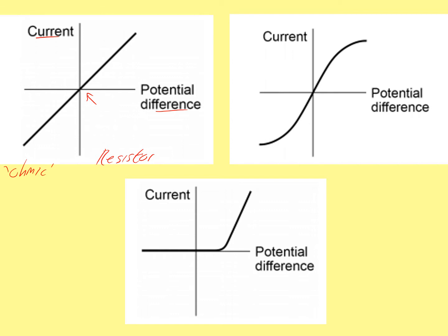The one on the top right is the IV curve for a bulb, and this one is non-ohmic. That's because it does not obey Ohm's law — current is directly proportional to potential difference. This one does not have a straight line, so therefore it does not obey Ohm's law.